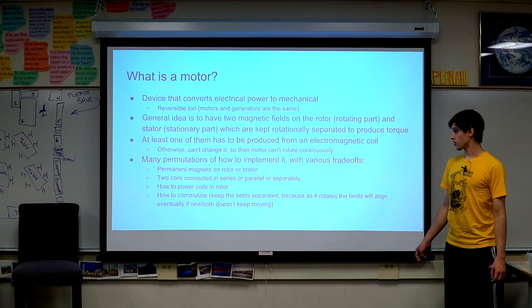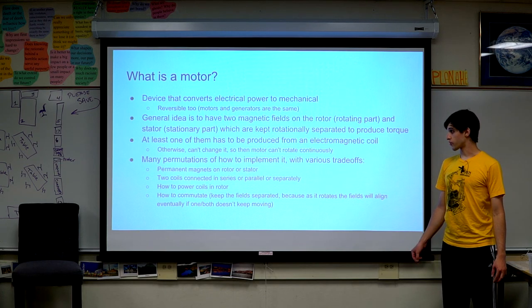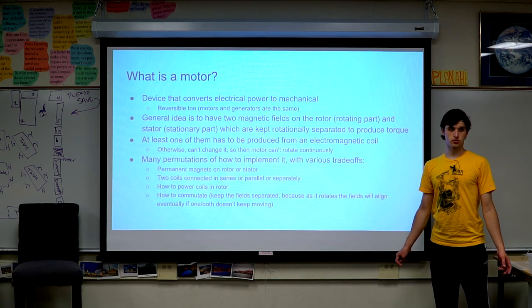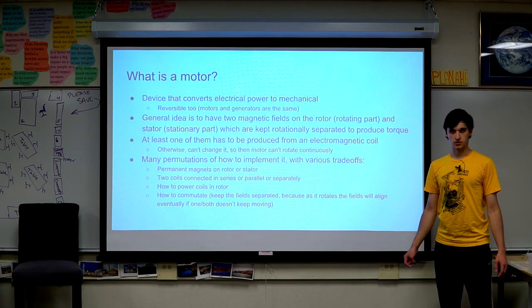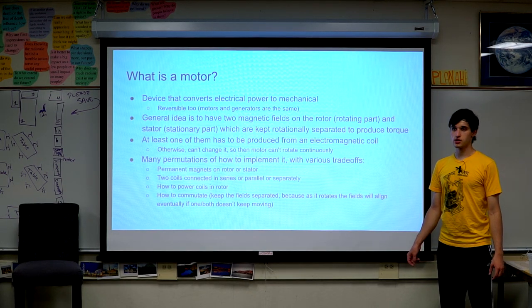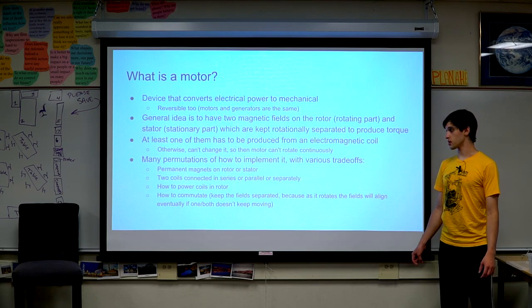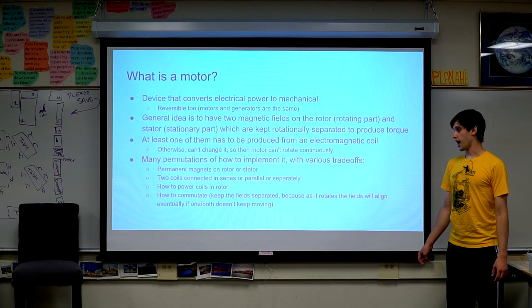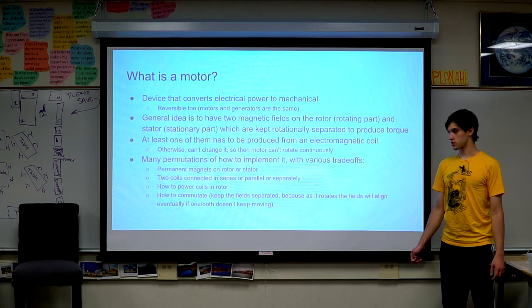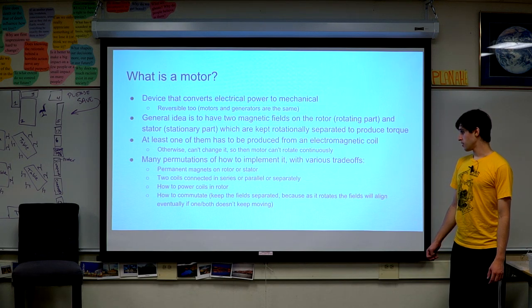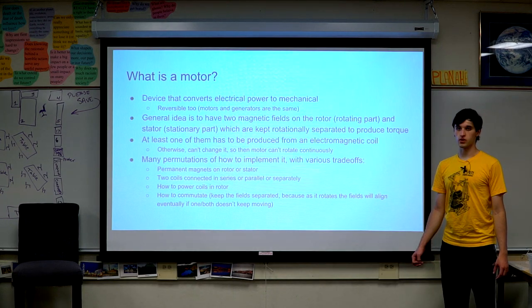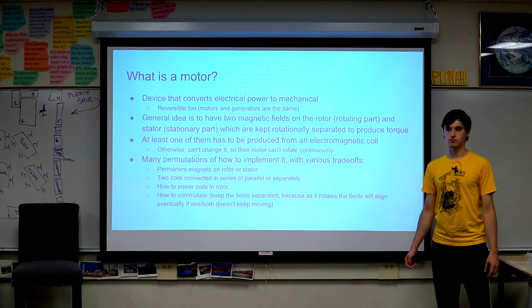Motors come in a huge variety of types with different design choices. You can use permanent magnets on one side, which makes things simpler so you don't have two sets of electrical coils to deal with. If you do have two coils you can connect them in series, parallel, or control them completely separately. If you have coils on the rotating part — the rotor — you have to figure out how to power them. There are also various choices in how you commutate, which is where you switch one of the fields continuously so the motor keeps rotating.